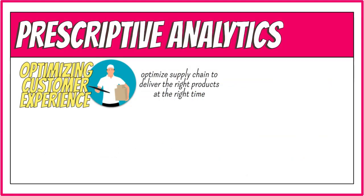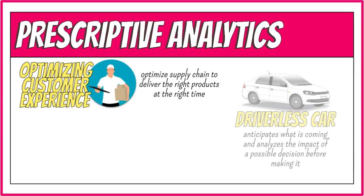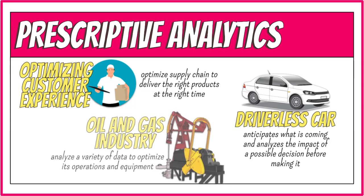Here are examples where prescriptive analytics is applied. Some companies use prescriptive analytics to optimize production, scheduling, and inventory along the supply chain to ensure they deliver the right products at the right time to the right customer in the most efficient way. During every trip, a driverless car makes multiple decisions based on predictions of future outcomes — it must anticipate vehicular traffic, pedestrians, bicyclists, and other objects on the road, and analyze the impact of a possible decision before actually making it. Prescriptive analytics also enables companies in critical operations, such as the oil and gas industry, to analyze structured and unstructured data to optimize their operations, including scheduling and equipment necessary to pump oil out of the ground.